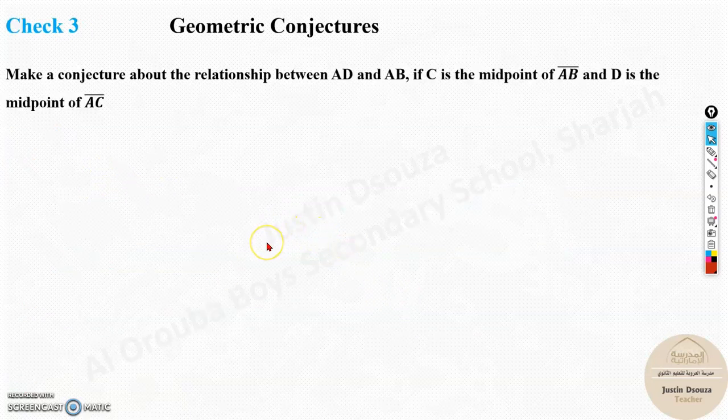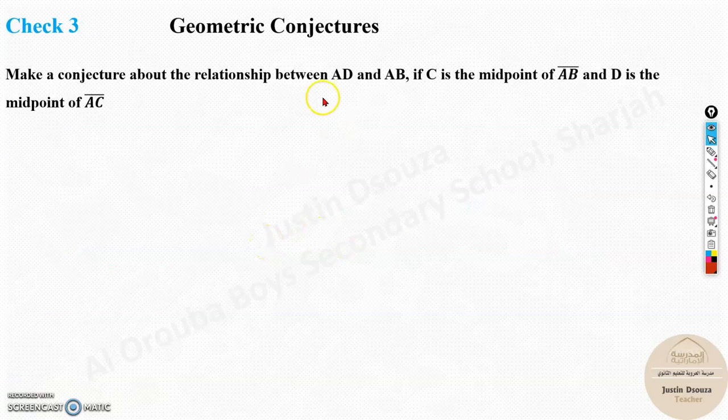Now, make a conjecture about the relationship between AD and AB if C is the midpoint of AB and D is the midpoint of AC. It's a bit confusing if you just read it straight away. Let's understand it properly.